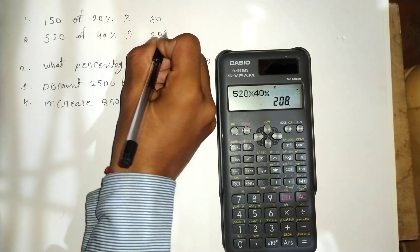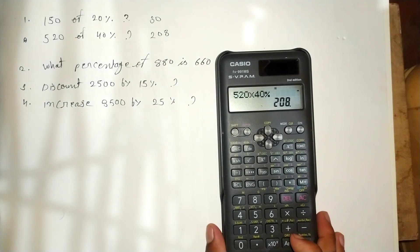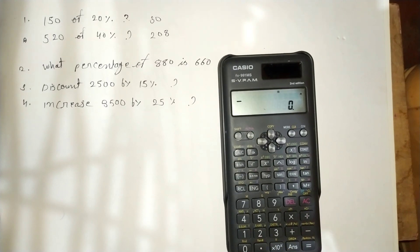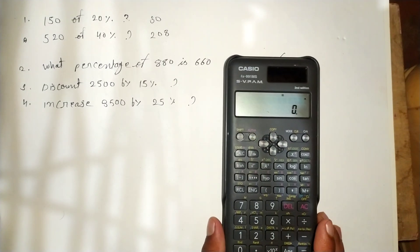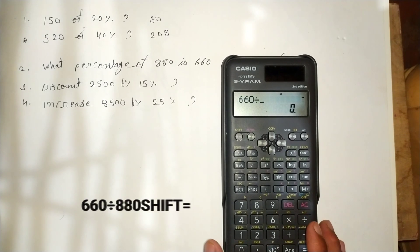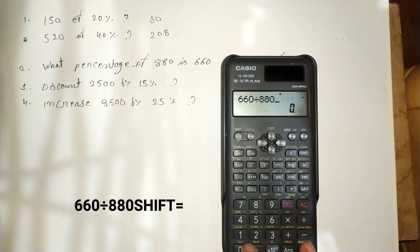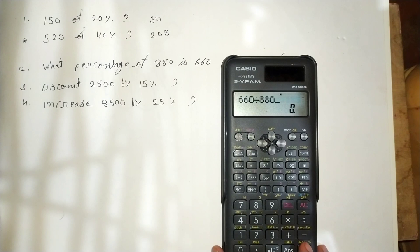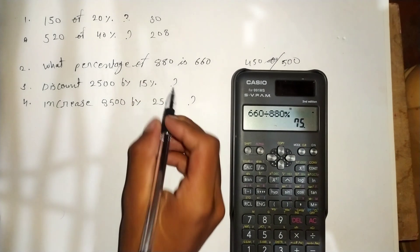The answer is 208. Next question: 660 out of 880. Press Clear All, then press 660 divided by 880, then press Shift and Equals. We get 75 percent.